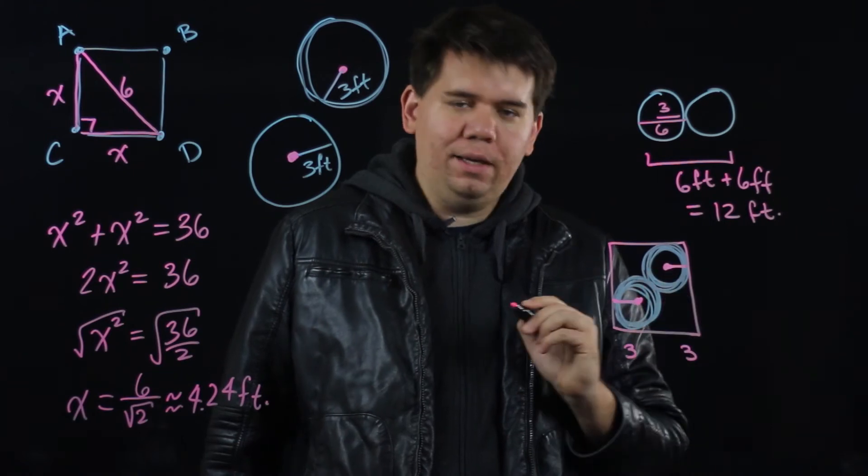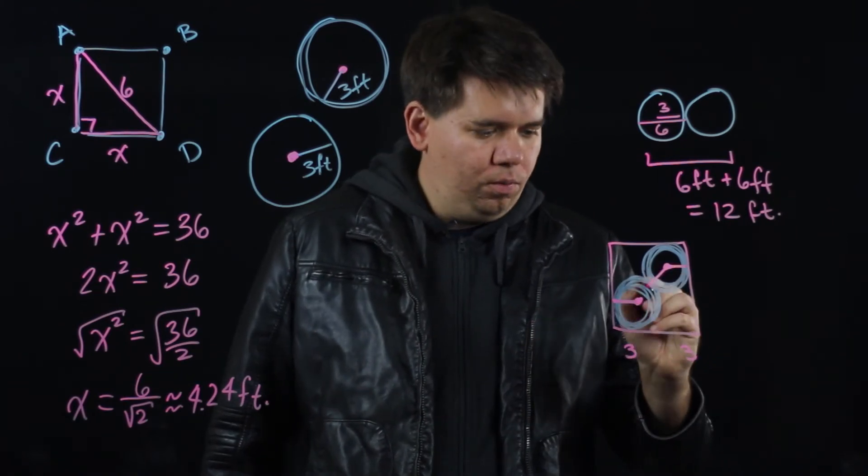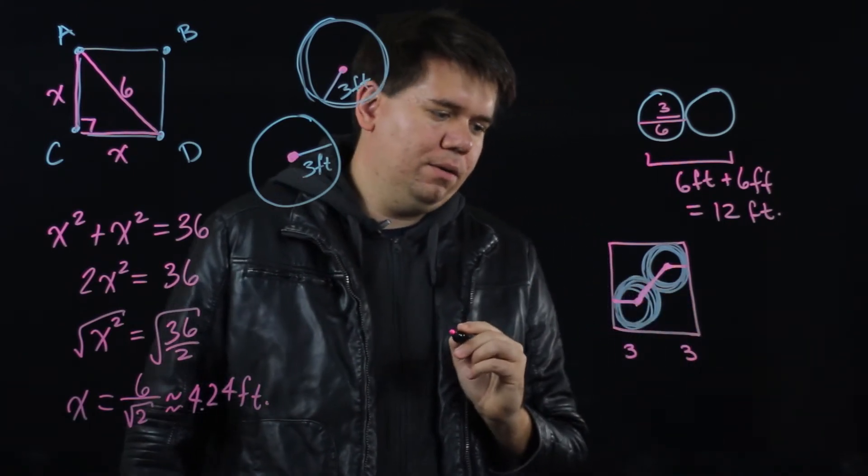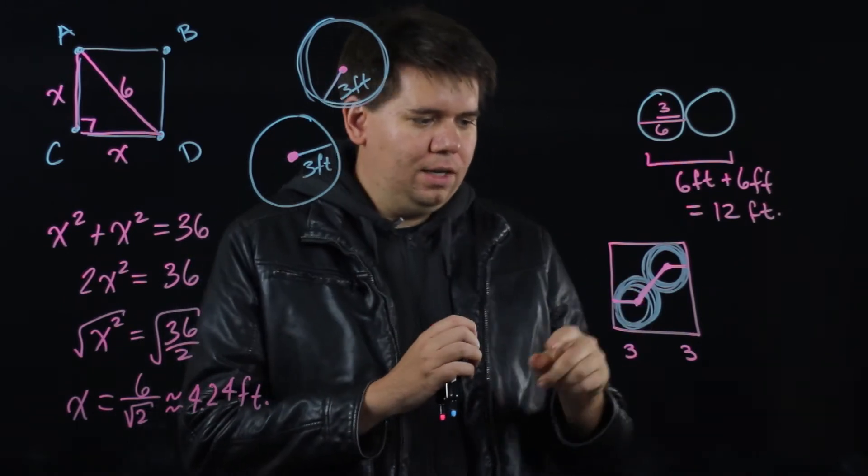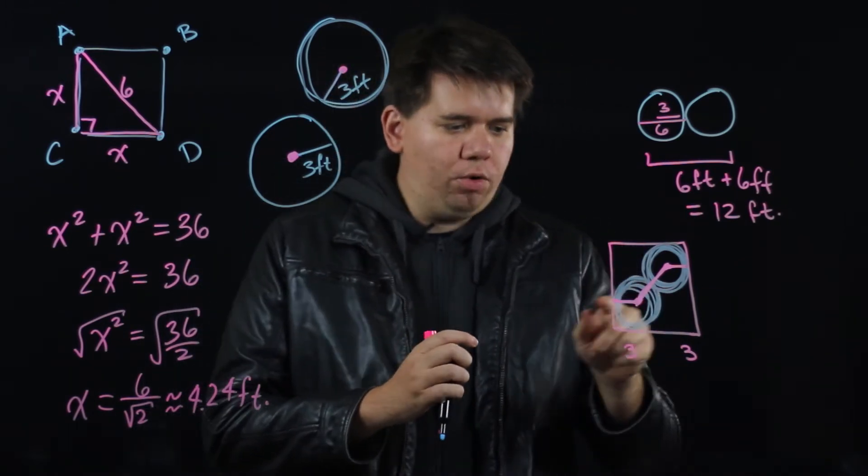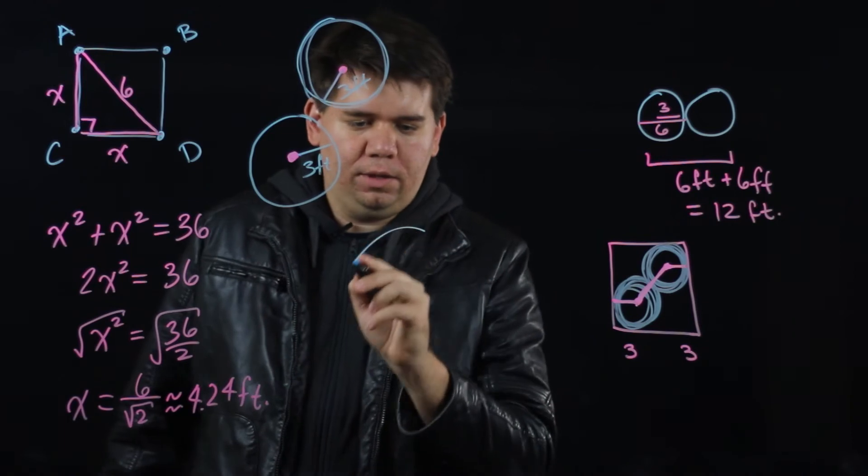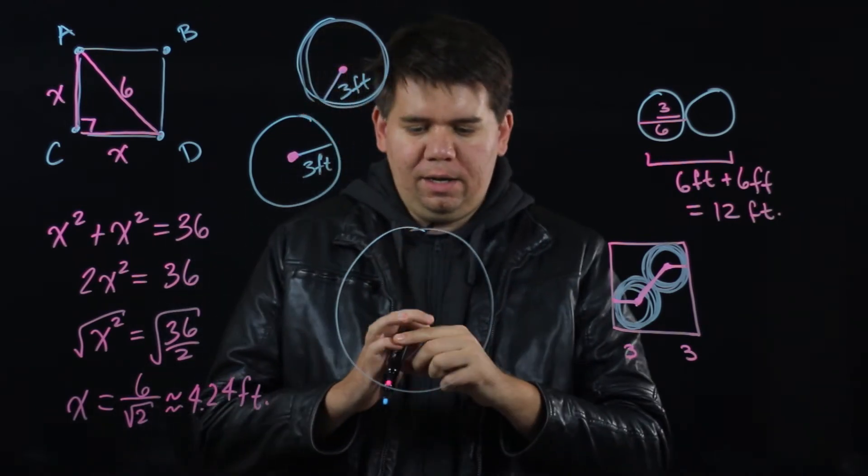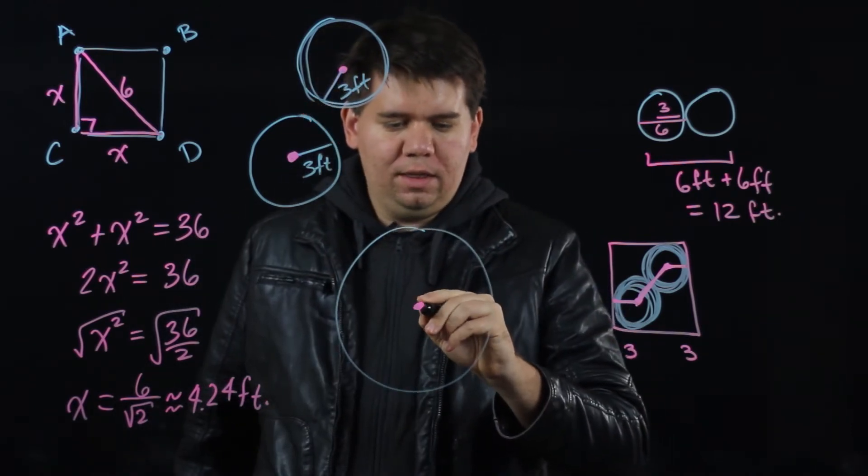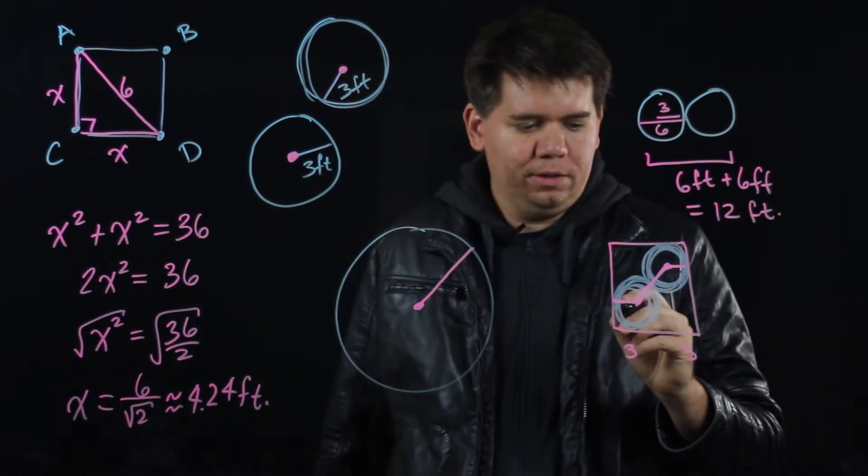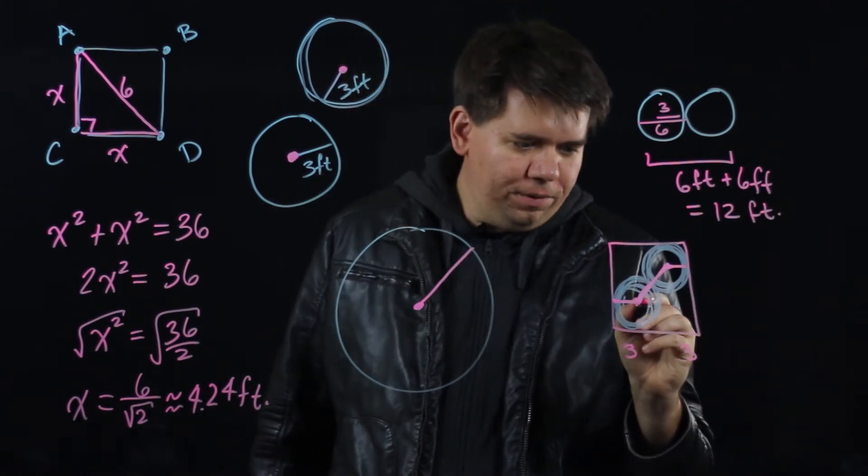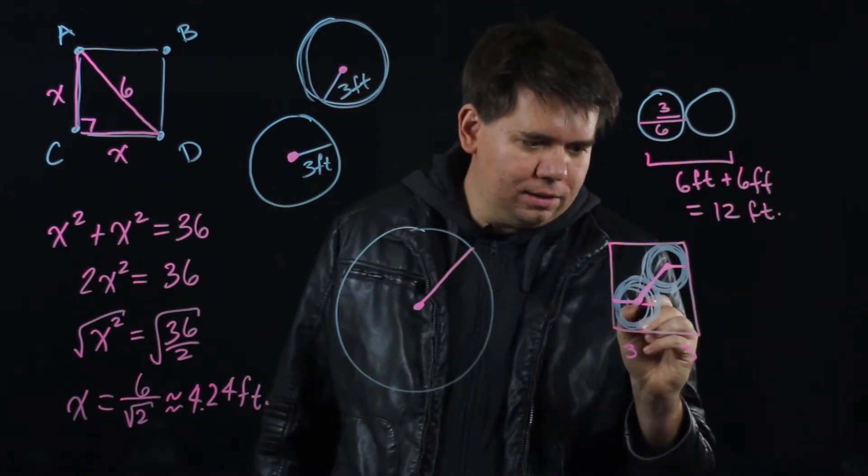But wait, what is going on here in the middle? What is going on here in the middle? If I take a closer look, let's zoom in on that corner of that circle. So here I have my circle, and I want to zoom in on this portion right here.